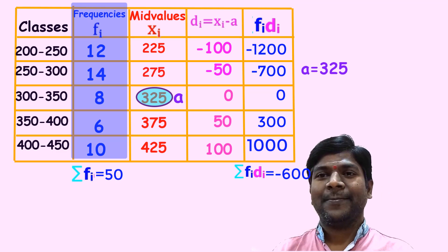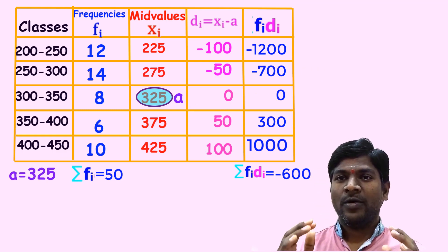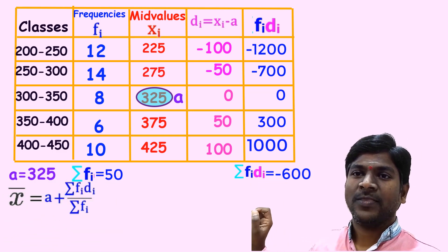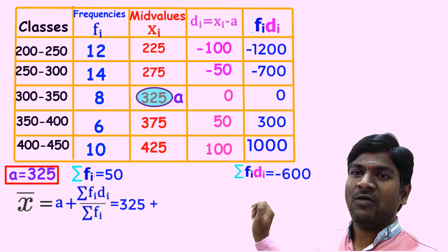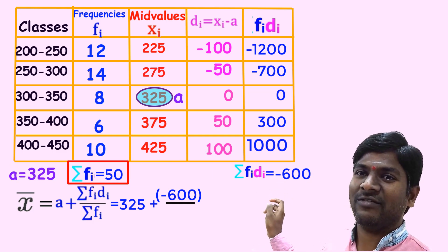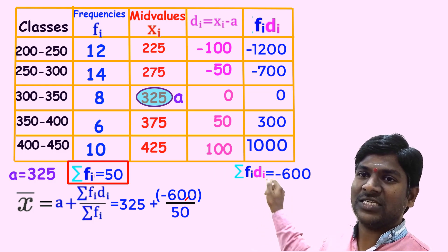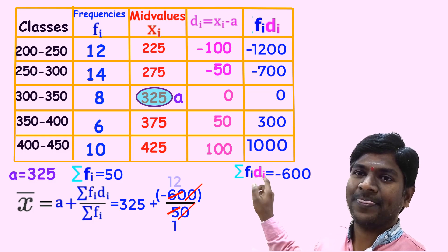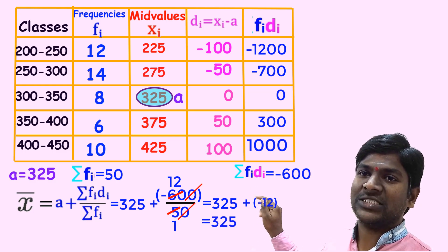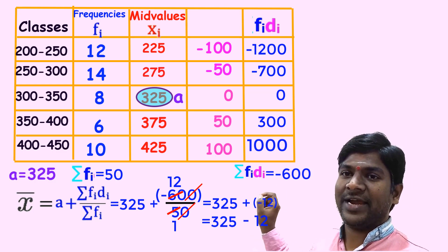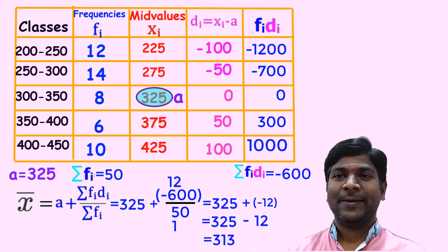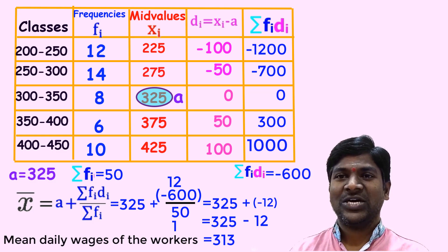We now have all values for the formula. Substituting: x̄ = 325 + (−600) / 50 = 325 + (−12) = 325 − 12 = 313. Therefore, the mean daily wages of 50 workers of the factory is rupees 313.